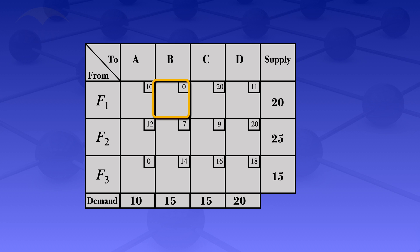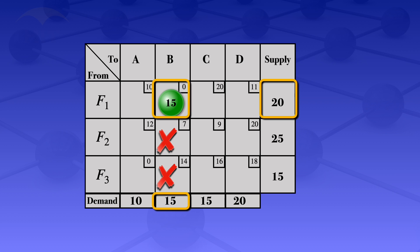To check how much we can allocate in this cell, we look at the supply constraint of 20 and the demand constraint of 15. We take the minimum of 15 and 20, which is 15, so we allocate 15 units there. Since we've satisfied the demand constraint of 15, we can no longer make allocations in this column, so we cross out all other cells in it. The row had a supply of 20 but we only allocated 15, leaving 5 more units to allocate in this row.